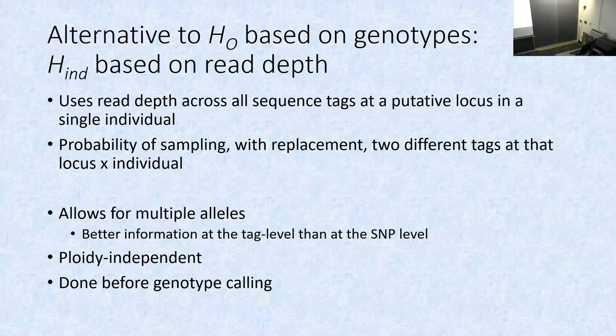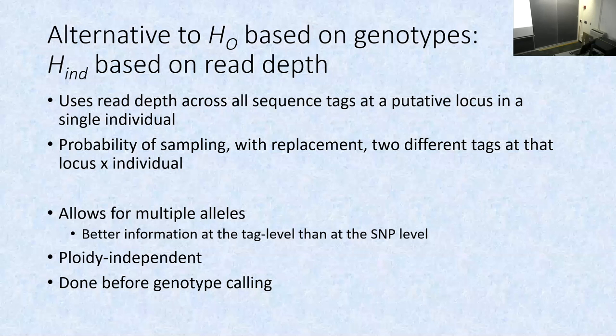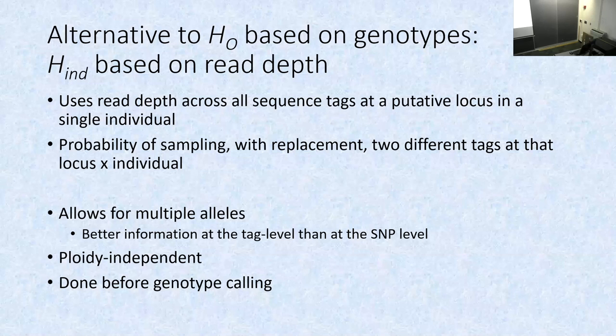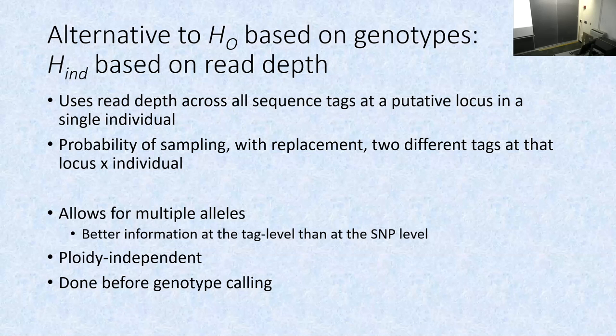Instead of using observed heterozygosity, I've come up with a statistic I'm currently calling HN. It's related to observed/expected heterozygosity but measured per individual per locus. For that locus, across all tags and read depths, you compute the probability that if you sampled two tags they would be different from each other. This doesn't require calling the genotype first, it allows for multiple alleles rather than forcing a biallelic SNP, it uses information from the whole GBS tag, and it works for any ploidy.